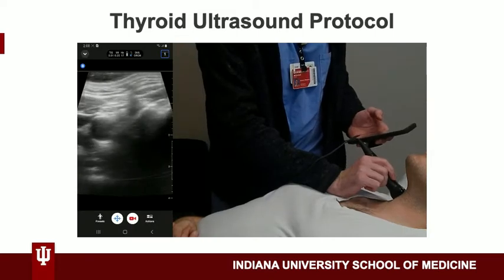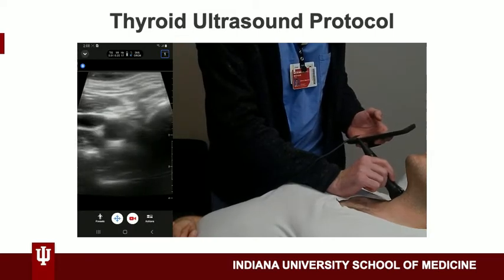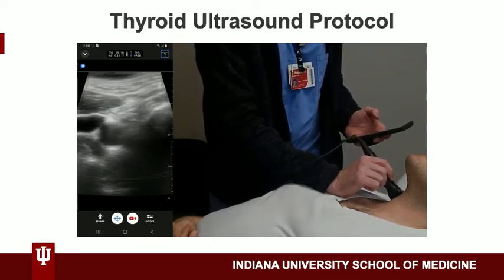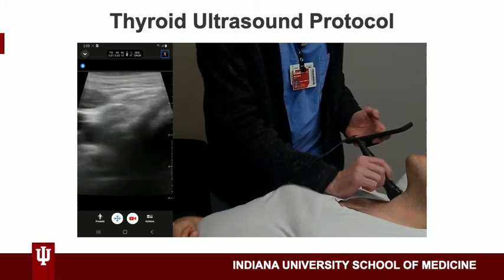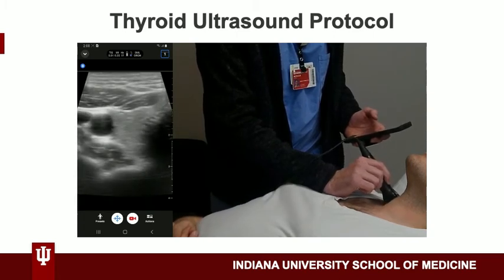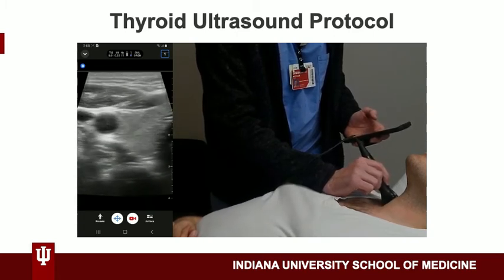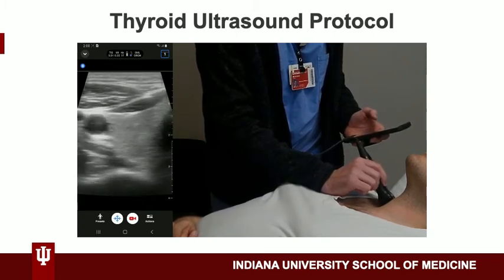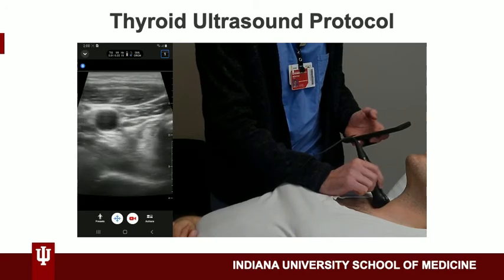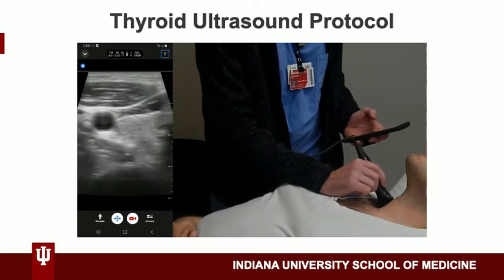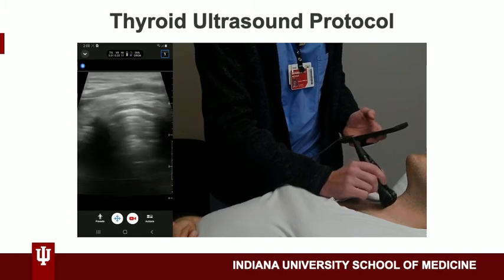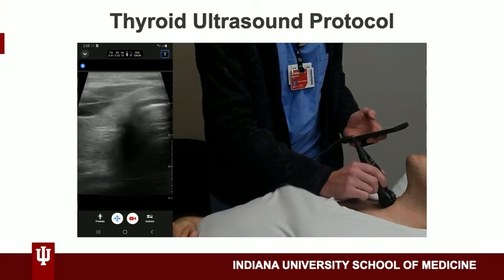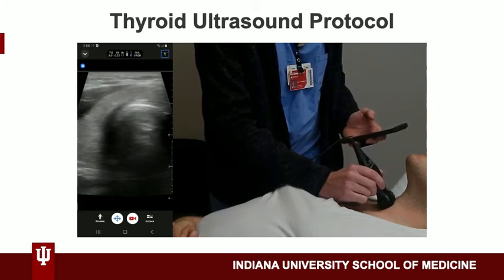When you begin scanning, you will want to start at the uppermost part of the right lobe of the thyroid and then scan down to the bottom. While doing this, try to identify surrounding structures, get measurements, and look for nodules. Then slide the probe over to look at the isthmus.